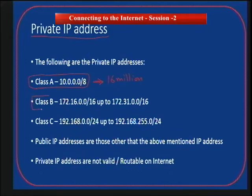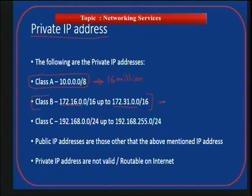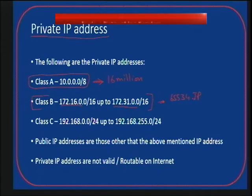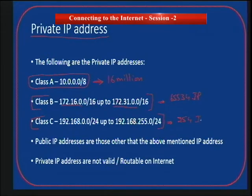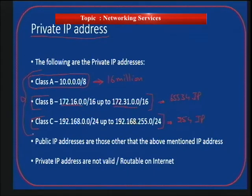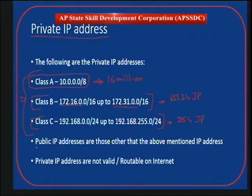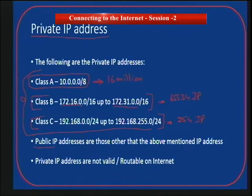In Class B, there are about 16 different Class B networks reserved, and each provides 65,534 IP addresses. In Class C, we have 256 Class C networks and each provides up to 254 IP addresses — so it is 254 multiplied by 256 to get the total range of Class C private IP addresses. These addresses are free to use and any organization can make use of them. Public IP addresses are those other than what is listed in Class A, B, and C.